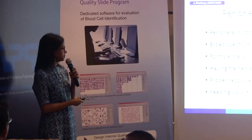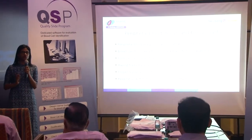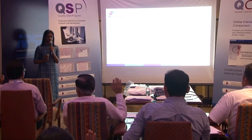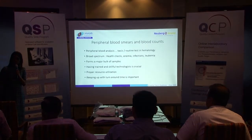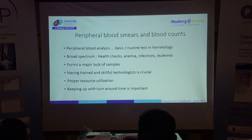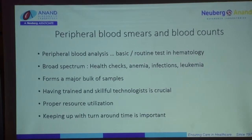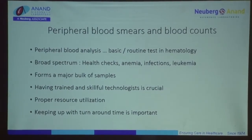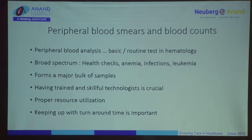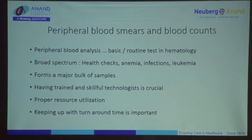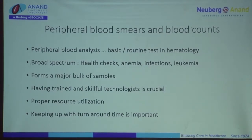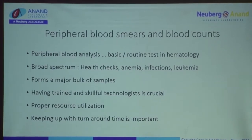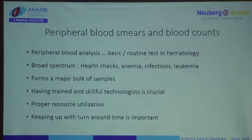We all know that peripheral blood smears — how many of us report them? Almost all of us. In any hematopathology lab, about 70 to 80 percent of our workload is CBCs and complete hemograms. It's a very basic test; anybody and everybody asks for a CBC — whether the patient has leukemia, lymphoma, fever, or is here for a master health check. Many times we do not have all the details of the patient, so we're left with the sample alone to crack the code, and that's not easy.